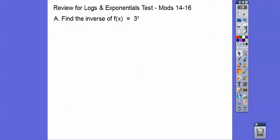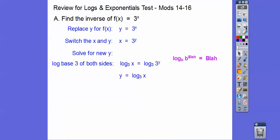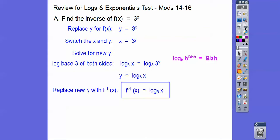Find the inverse of f(x) = 3^x. We replace y with f(x), then switch the x's and y's, and solve for the new y. Since x is in the exponent, we log both sides using log base 3. I call it the 'blah blah rule' — as long as the base matches, it equals that exponent. So these 3's match up and this just equals y, giving us f⁻¹(x) = log base 3 of x.